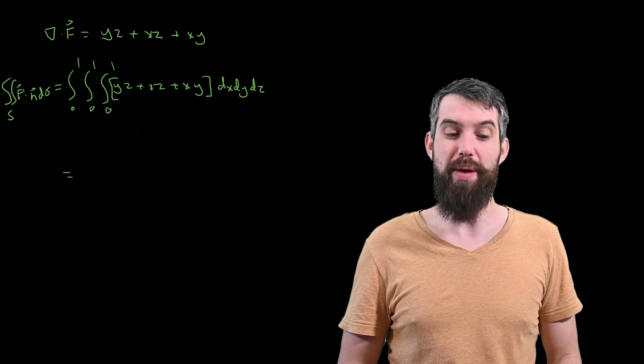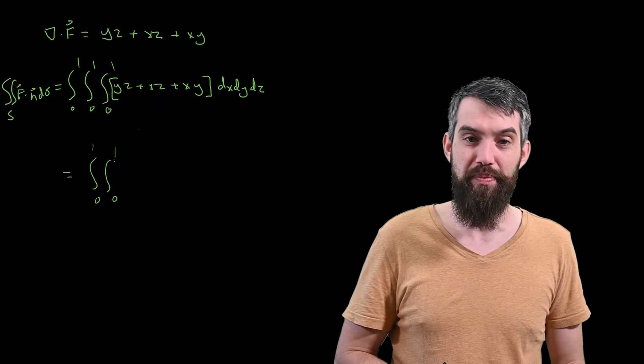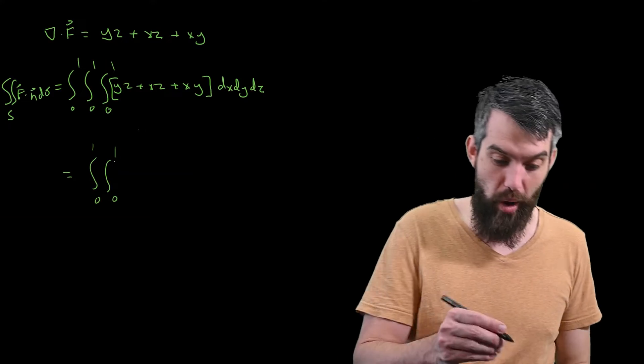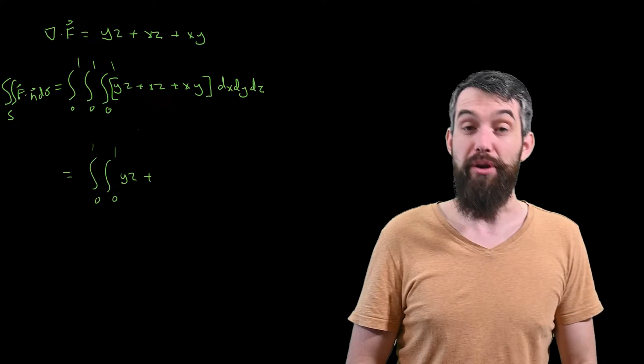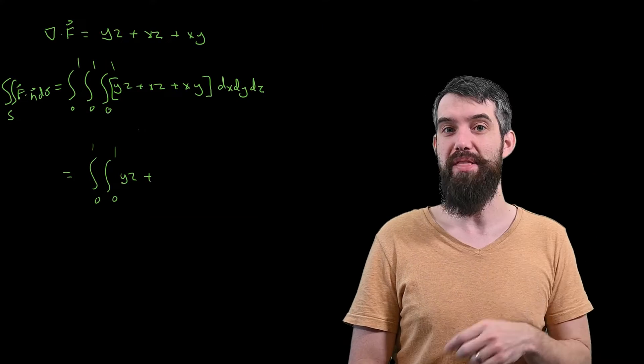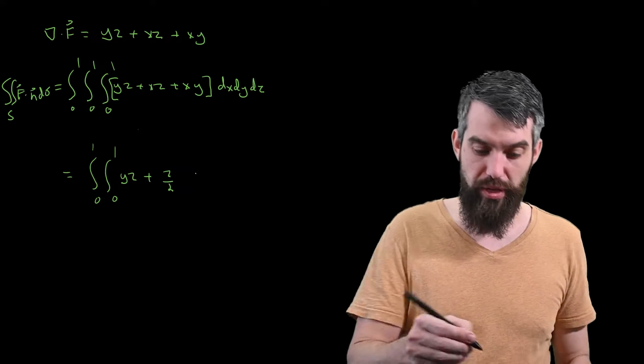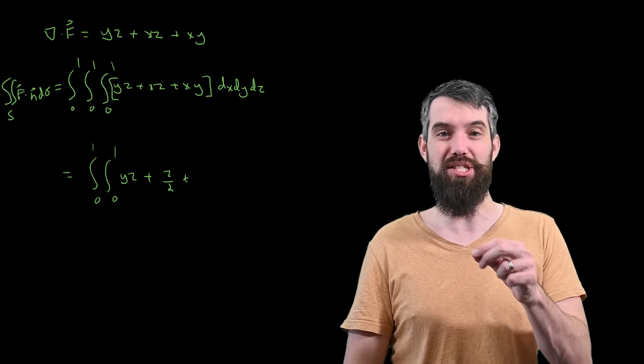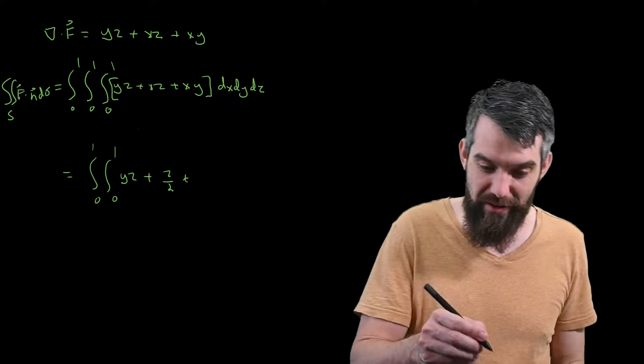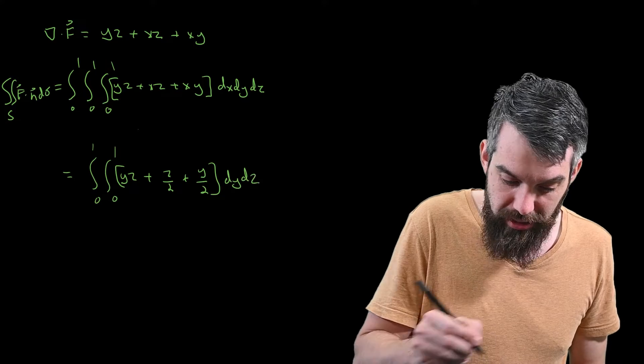Well, first I'm going to do the integral with respect to x, so I'll leave the outer two integrals 0 to 1 and 0 to 1. The first term is yz, it integrates to yz times x between 0 and 1, it's just going to give me y times z. There is an x in the second term, so it integrates to x squared over 2 times z, and then evaluated between 0 and 1 is just going to give me z divided by 2. And likewise for the third term here, I have an x, it's going to integrate to x squared over 2 multiplied by the y, evaluated 0 and 1, I just got that half, so plus y divided by 2, and then I've already integrated out the dx, so I just have a dy dz remaining.